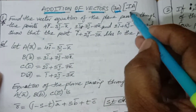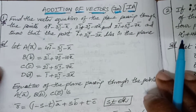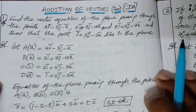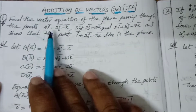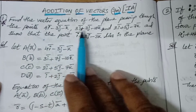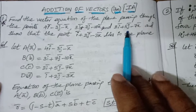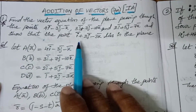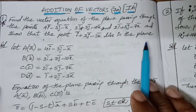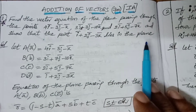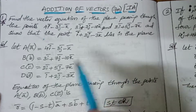We are going to see addition of vectors. We are getting one question from one year exam - very important questions only will be uploaded here. Find the vector equation of a plane passing through the points 4i minus 3j minus k, 3i plus 7j minus 10k, and 2i plus 5j minus 7k, and show that the point i plus 2j minus 3k lies in the plane.